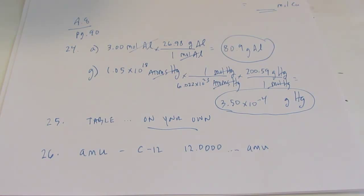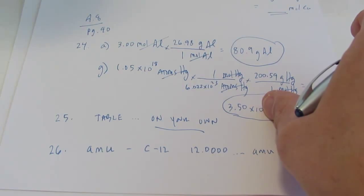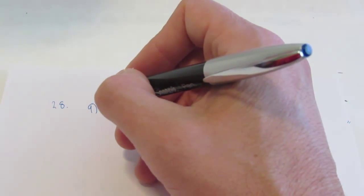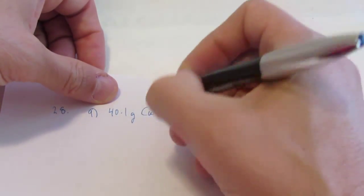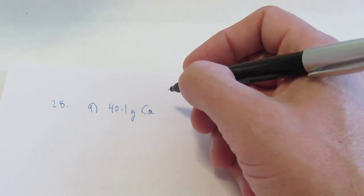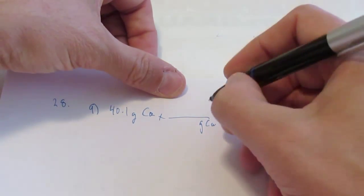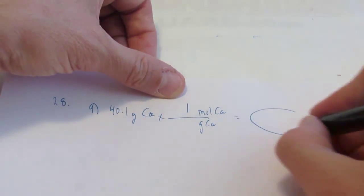Number 27 has some definitions — I think you can do that on your own. Number 28 asks you to go from grams to number of atoms. Letter A: we have 40.1 grams of calcium and it wants to know how many moles we have. We just go from grams of calcium to moles of calcium — put a 1 by mole — and I'll let you finish that off.